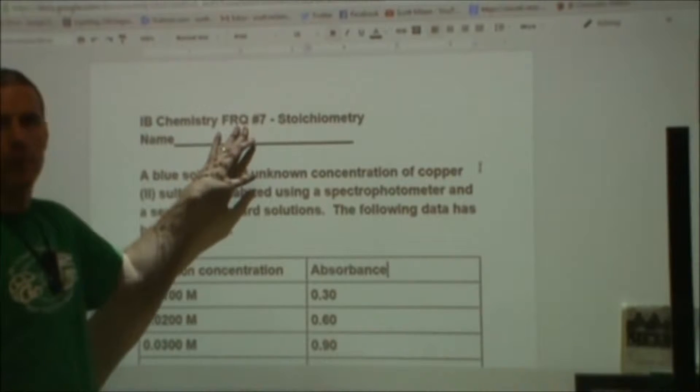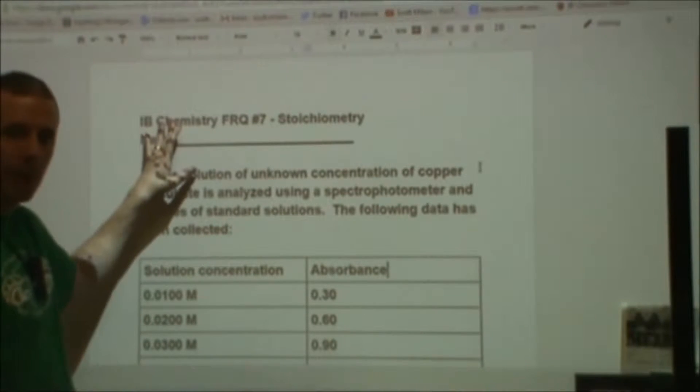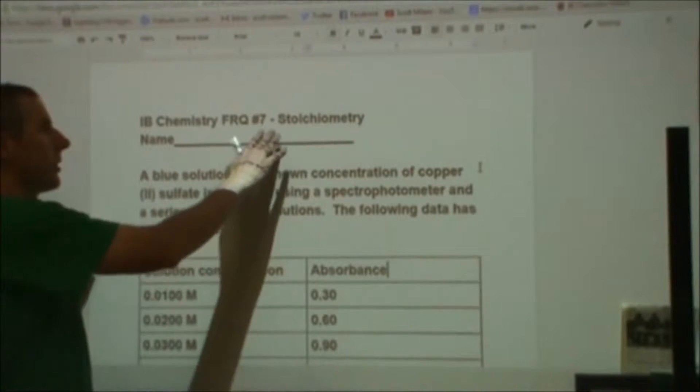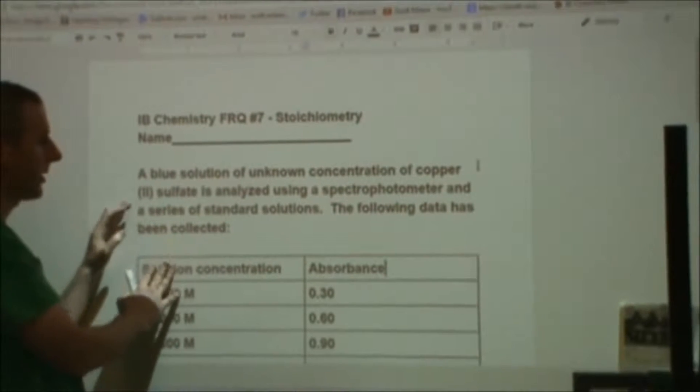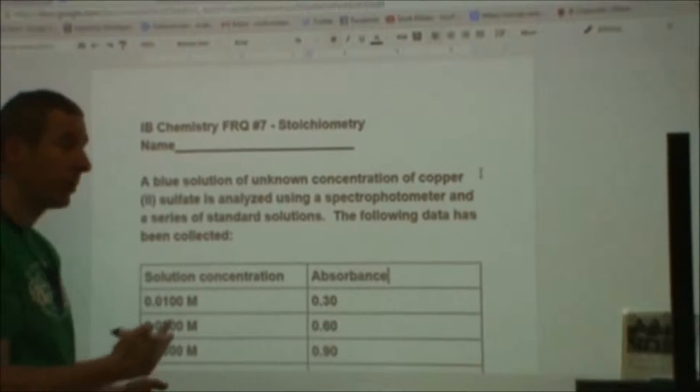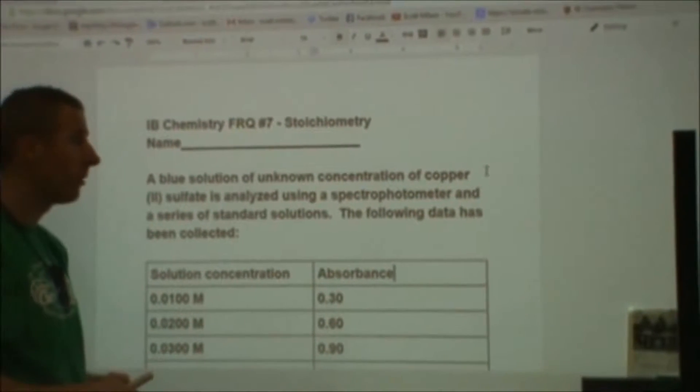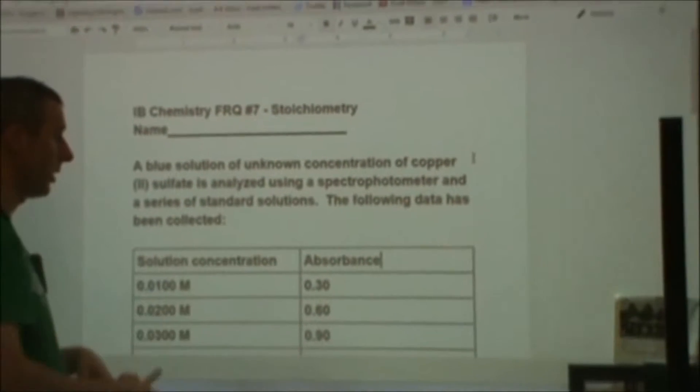Here I'm going to go through the 7th FRQ, the free response question. This is an IB paper style 2 question. It's mostly on stoichiometry with a couple of other things mixed in. If you want to try the problem first, you can find the link to this Google Doc in the description below and then come check the solution here.